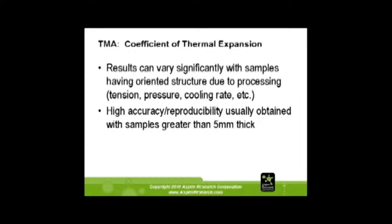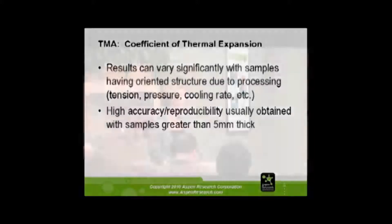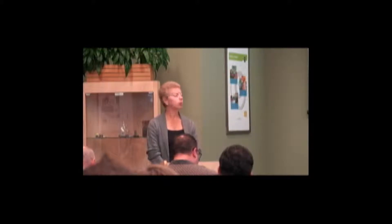With TMA, you also need to ensure there's no stress relaxation occurring. If stress is built into the sample, you need to heat it up to just below the glass transition, let it come down, and then do your sample testing. The best accuracy is achieved with samples about 5 millimeters thick. We do use smaller samples, but for the greatest reproducibility, 5mm is preferred.